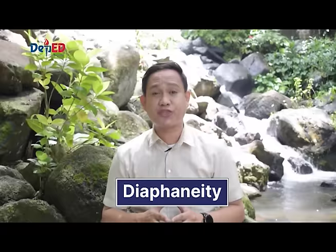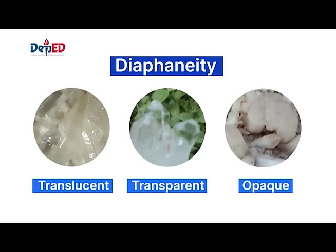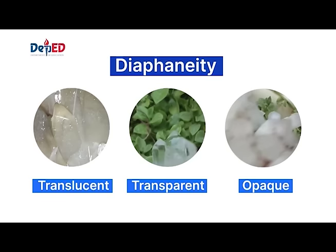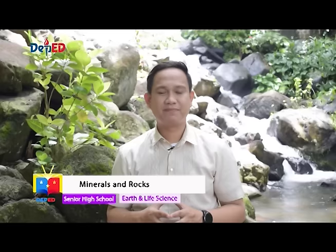Diaphanity or transparency is a mineral's degree of transparency or ability to allow light to pass through it. The degree of transparency may also depend on the thickness of the mineral. To test for transparency, hold the specimen up to the light. If you can see through it, it is called transparent. If you put your finger behind the mineral and see the shadow of your finger, it is called translucent. If no light comes through it, it is called opaque.